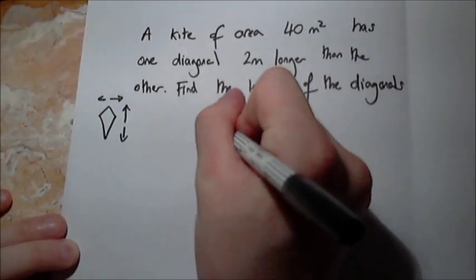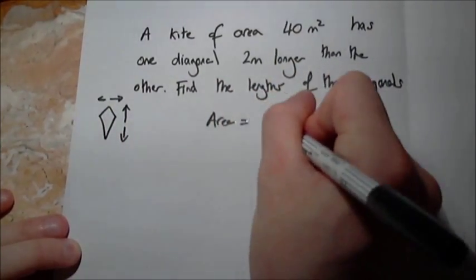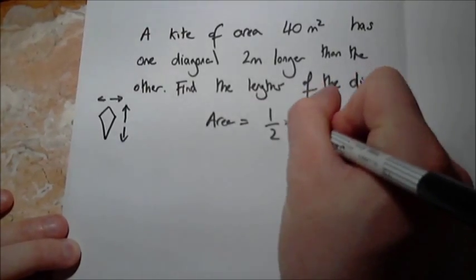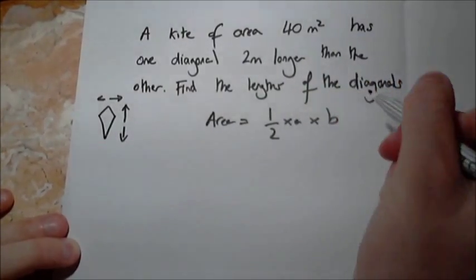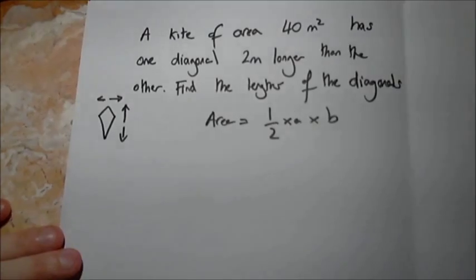The formula is area equals half times one of the diagonals times the other diagonal. So we've got somewhere to start with now.